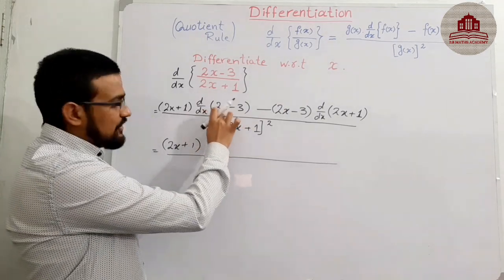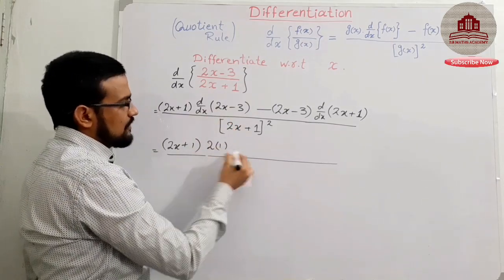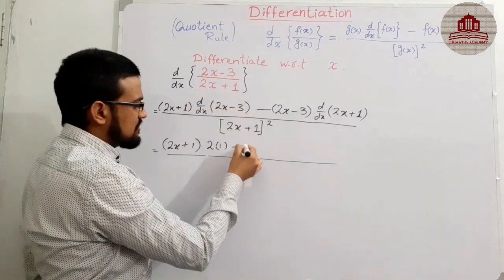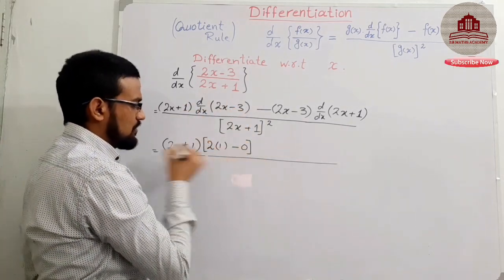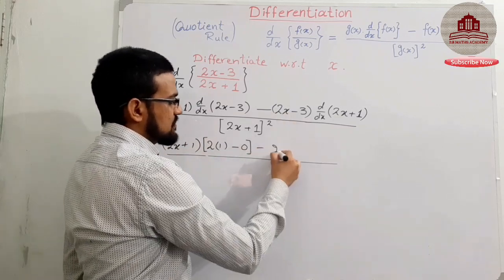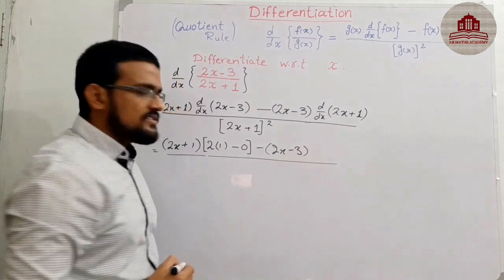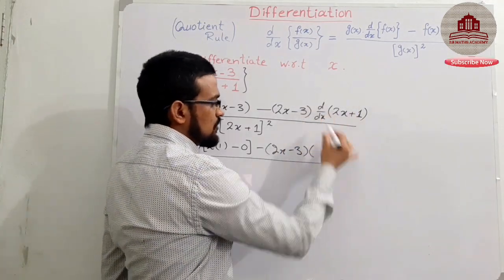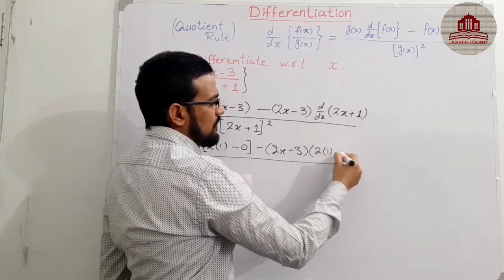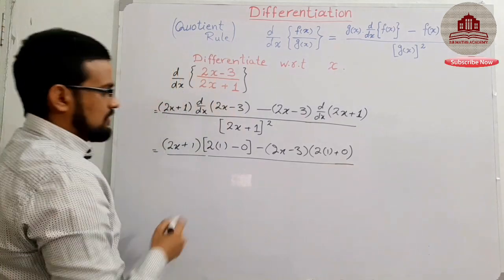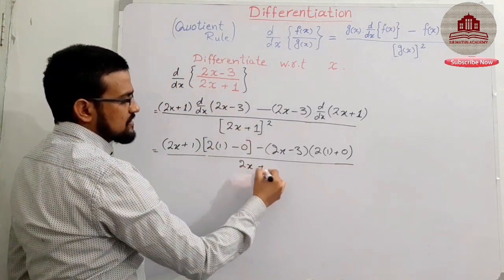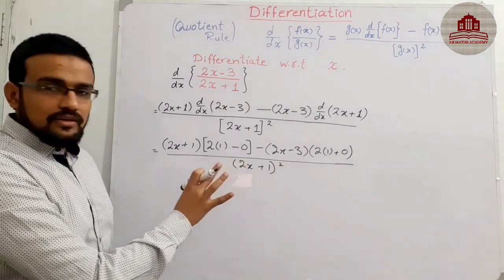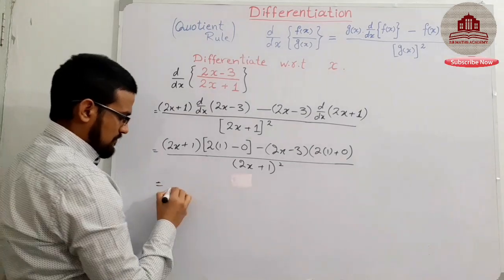The derivative of x is equal to 1, minus 3: 3 is a constant and the derivative of a constant is 0. Same 2x − 3 as it is. Similarly, the derivative of 2x + 1 is 2 times the derivative of x, which is 1, plus 0. The whole expression is over (2x + 1) whole square.